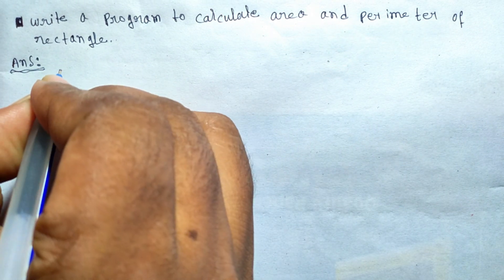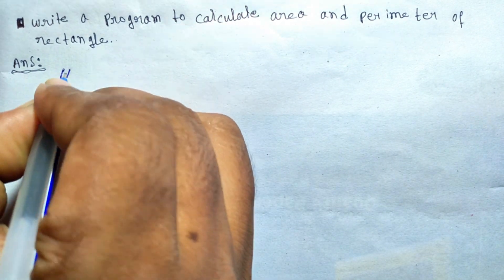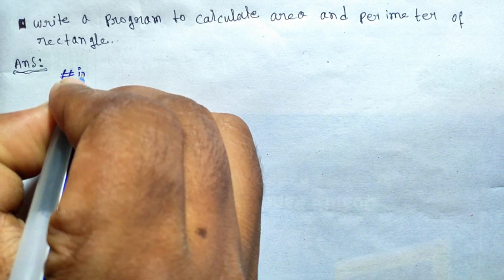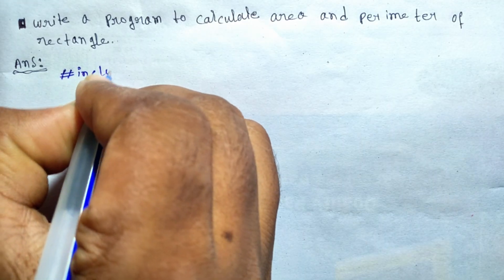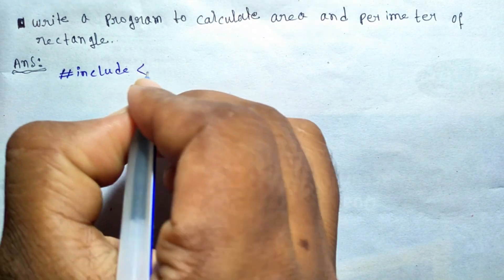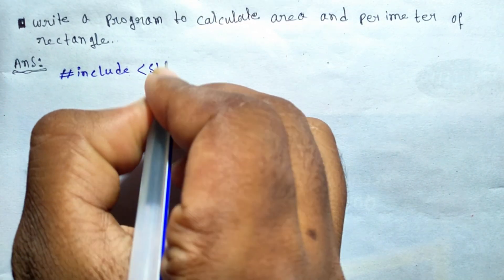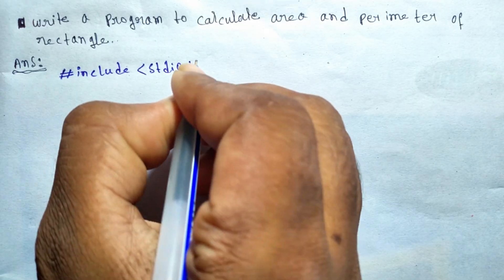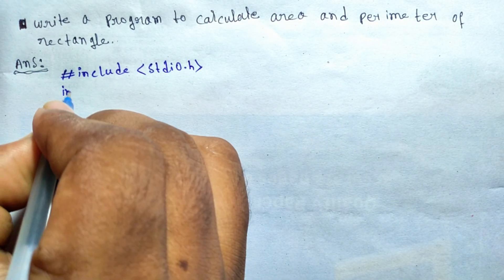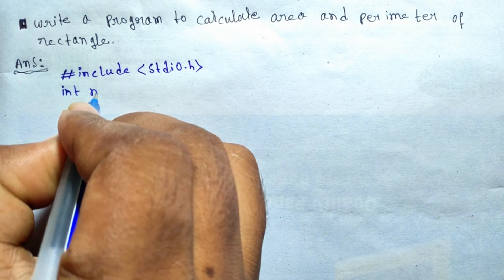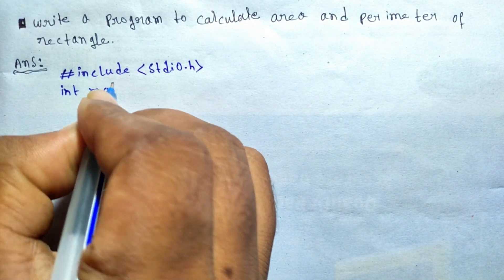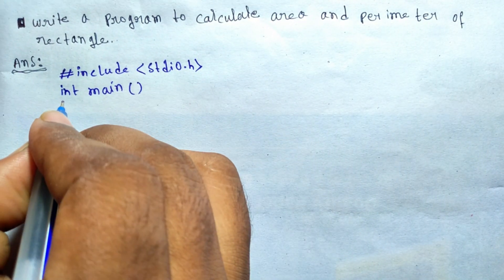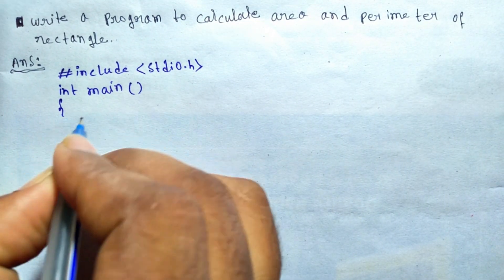Hi guys, today we're going to tackle an essential exercise in C programming: writing a program to calculate the area and perimeter of a rectangle. This exercise might seem straightforward, but it's an excellent way to understand how to use formulas, interact with user inputs, and apply mathematical operations in C.